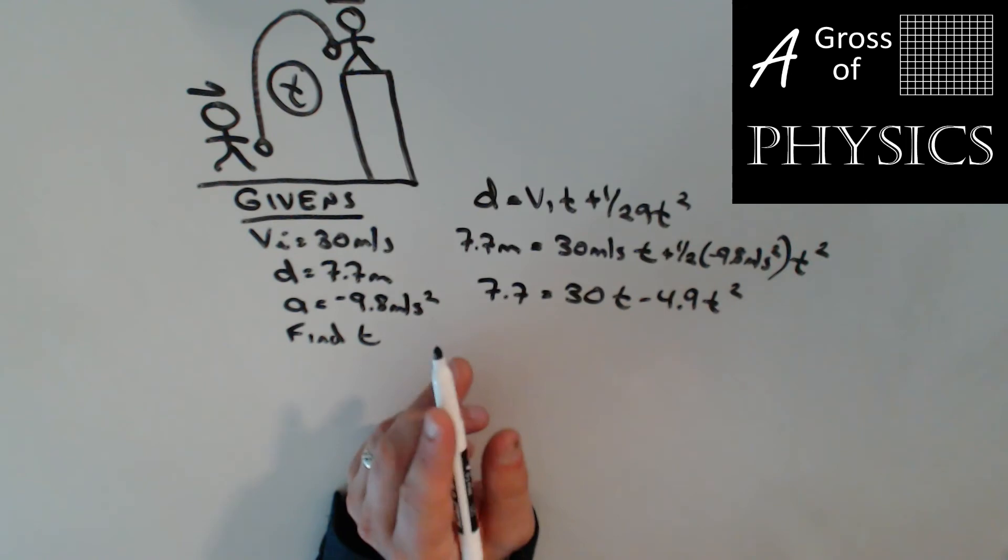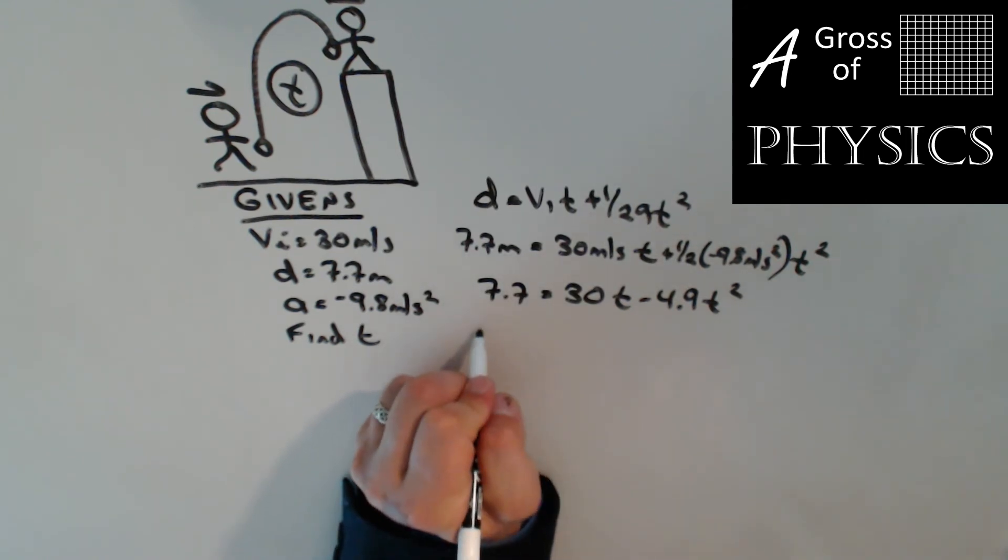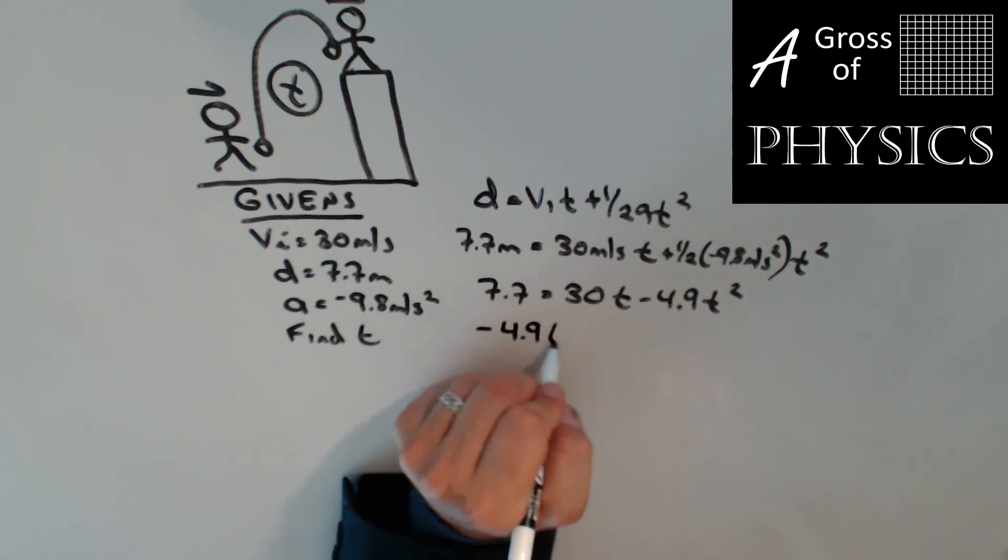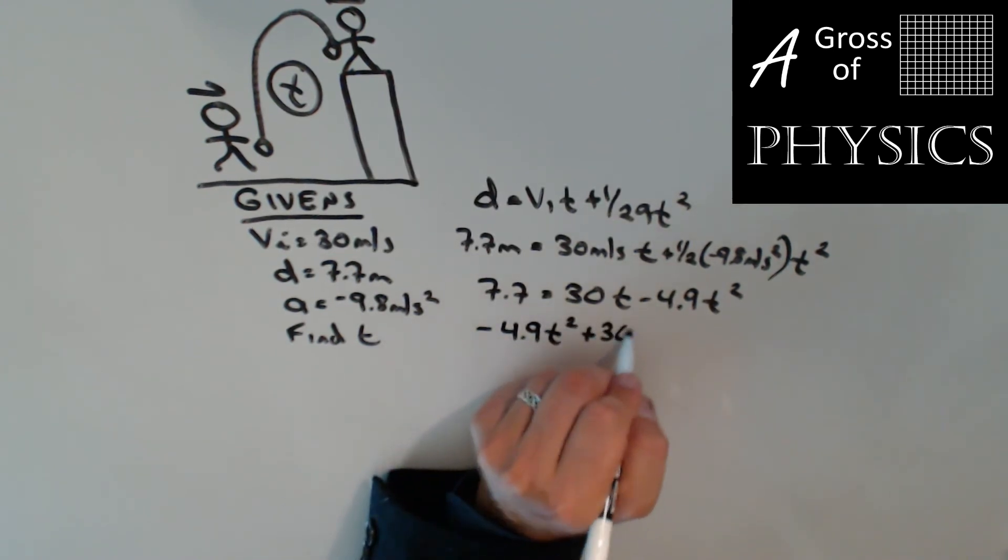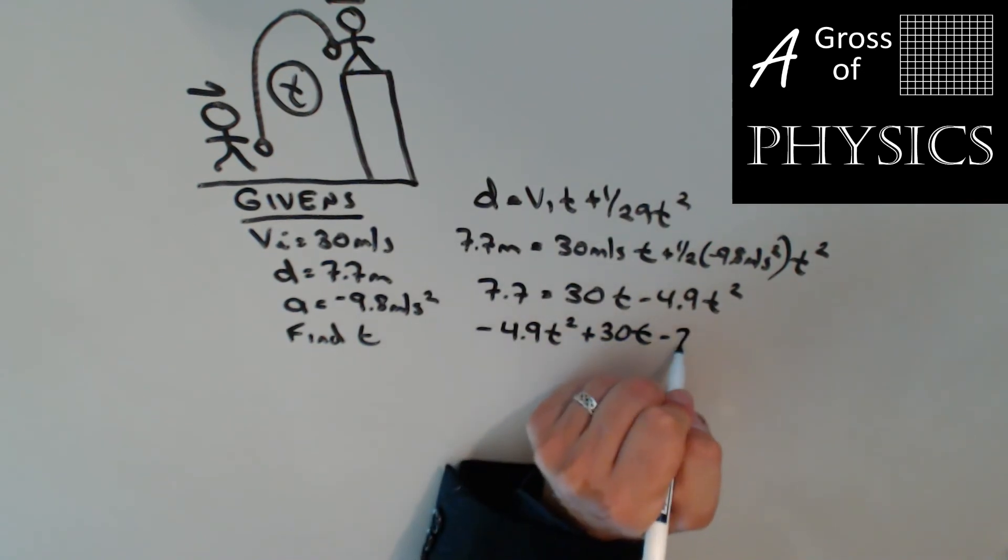We haven't dealt with problems where there's multiple t's before. Let me rearrange this again: negative 4.9t squared plus 30t, and I'm going to bring the 7.7 over, minus 7.7 equals zero.